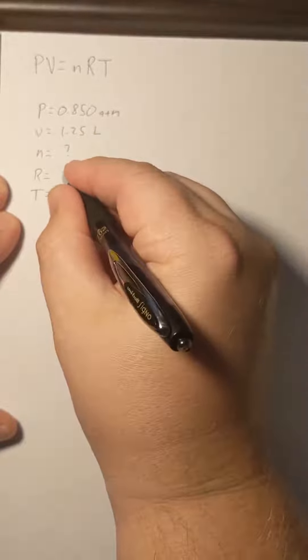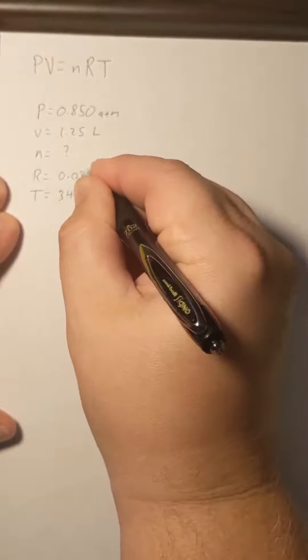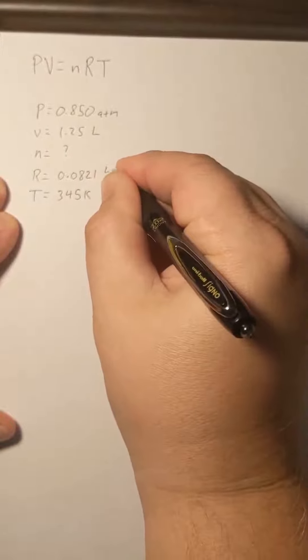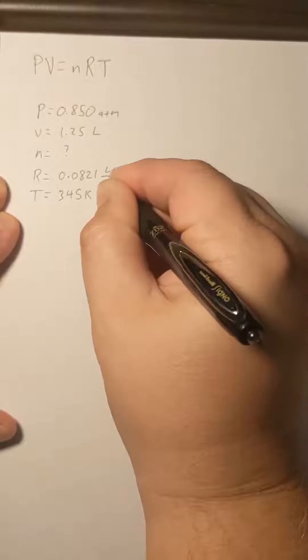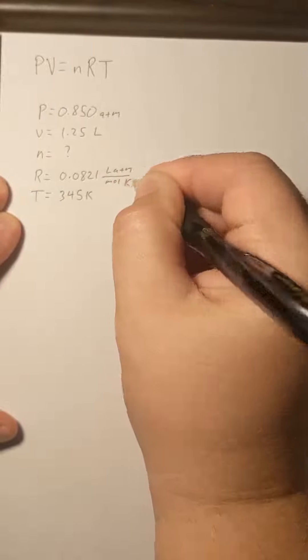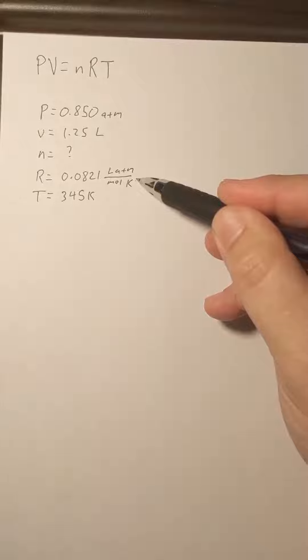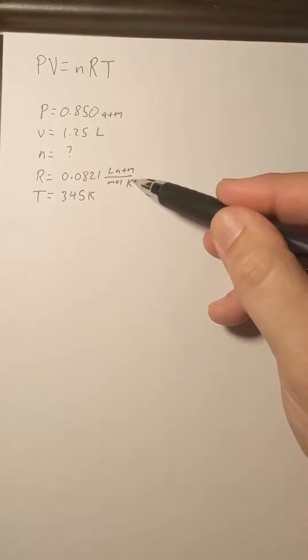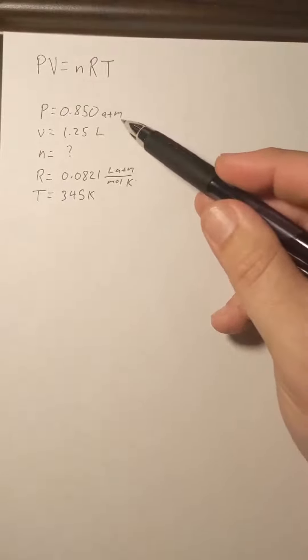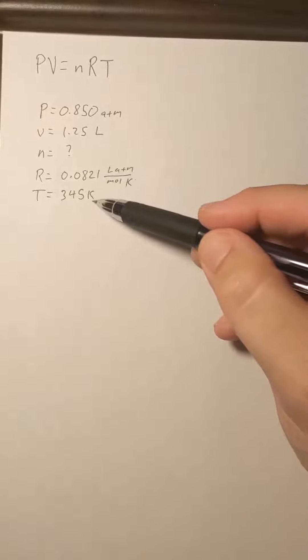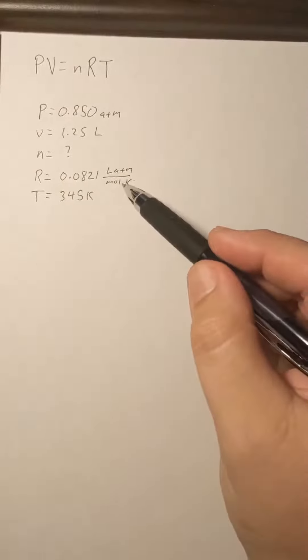Our value for the gas constant is 0.0821 liter atmospheres over mole Kelvin. And it's this value right here, our value for the gas constant R, that's going to tell us what our units have to be for pressure, volume, moles, and temperature. We've got to cancel everything out with R.